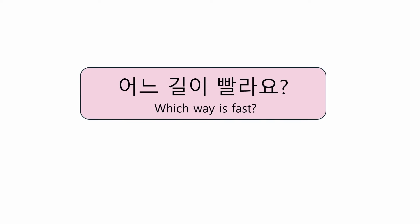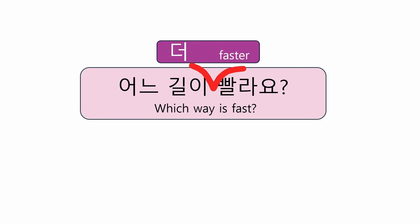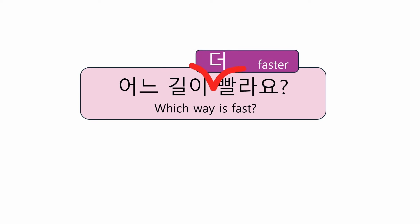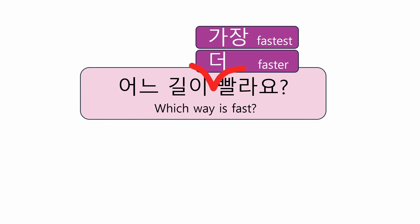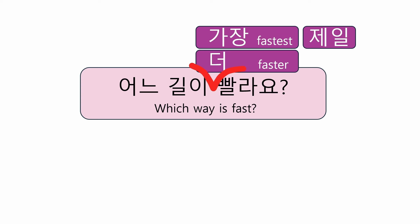Tip: when given limited choices, it's more natural to express comparatives and superlatives. For example, if there are several ways to get to a certain point, you can ask: 어느 길이 빨라요? — 어느 길이 더 빨라요? — Which way is faster? — or 어느 길이 가장 빨라요? / 어느 길이 제일 빨라요? — Which way is the fastest? Note that 가장 and 제일 can be used interchangeably.